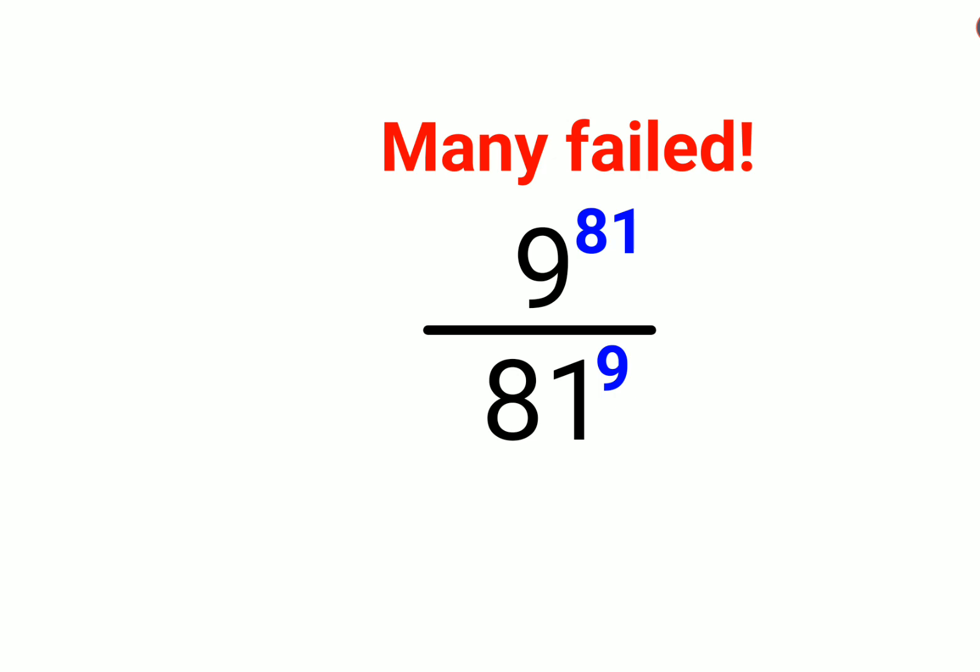So what we will do here is write 9 raised to 81 as 9 raised to 9 times 9. And remember, a raised to m times n can be written as a raised to m, the whole raised to n.